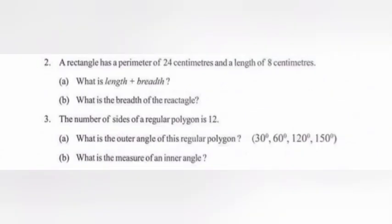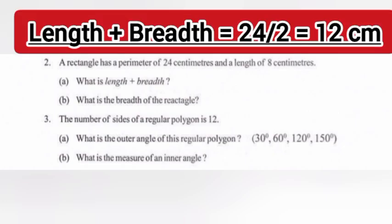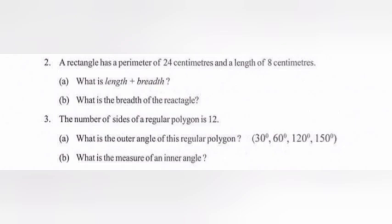2. A rectangle has a perimeter of 24 cm and a length of 8 cm. A. What is length plus breadth? Answer: Length plus breadth equals 24 divided by 2 equals 12 cm.